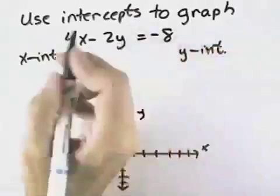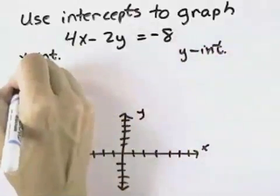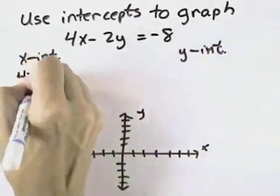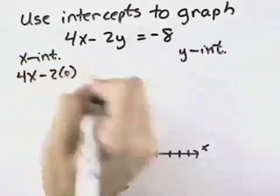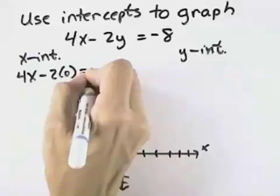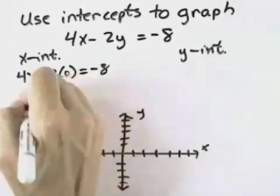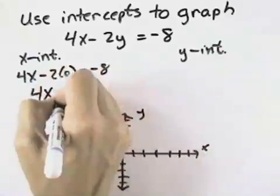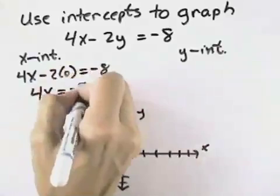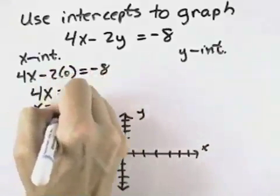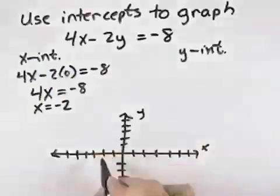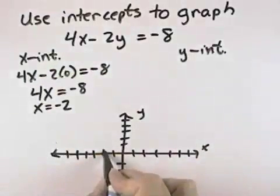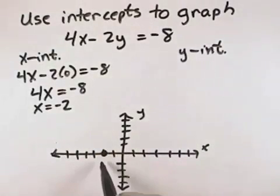For the x-intercept, we let y equal 0, so we have 4x minus 2 times 0 equals negative 8. 2 times 0 is 0, so 4x equals negative 8, which means dividing by 4, x will equal negative 2. So our x-intercept, the point where we cross the x-axis, is at negative 2.